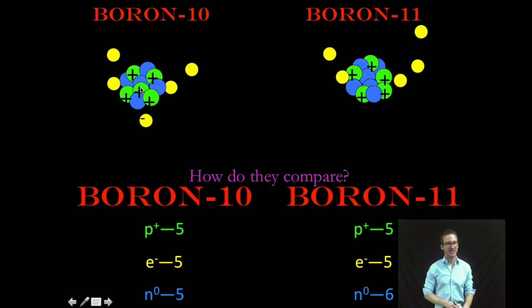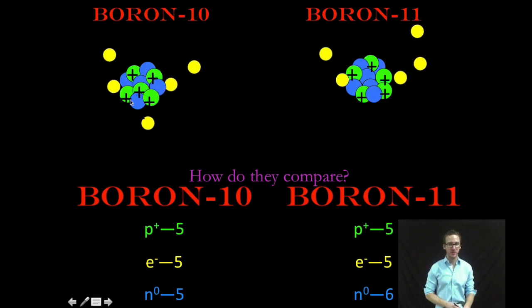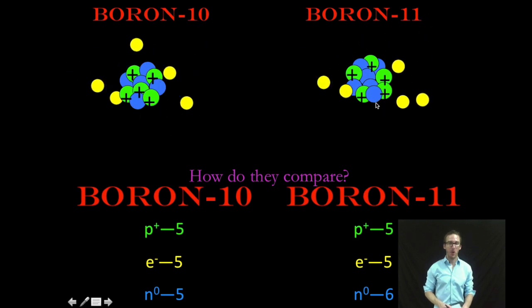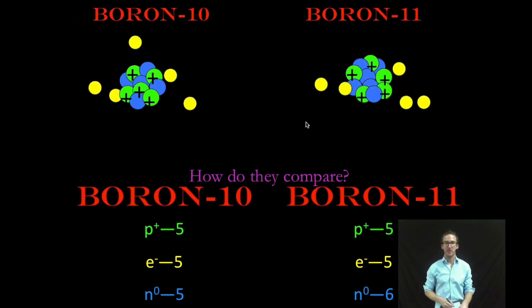This one has a mass of 10 because there are five positive protons and five neutral neutrons for a total mass of 10 whereas in boron-11 still five protons but this time there are six neutral neutrons.